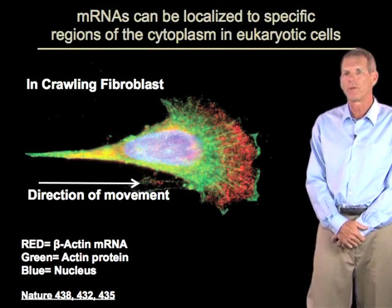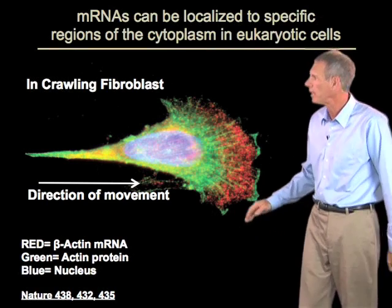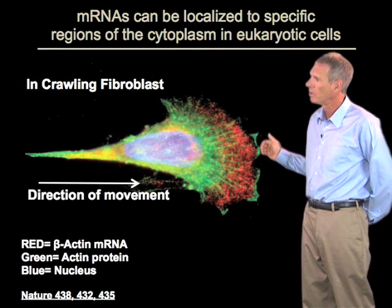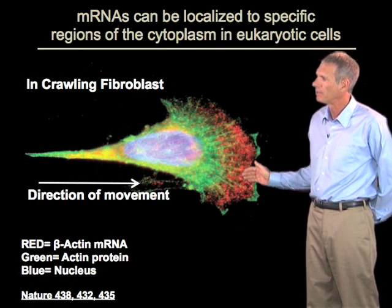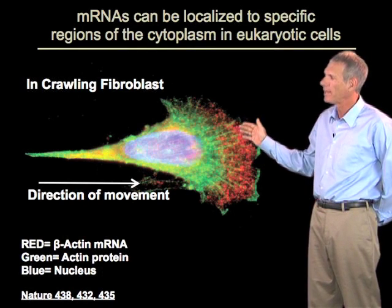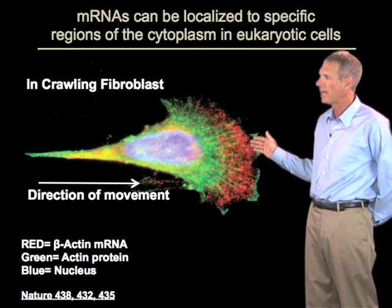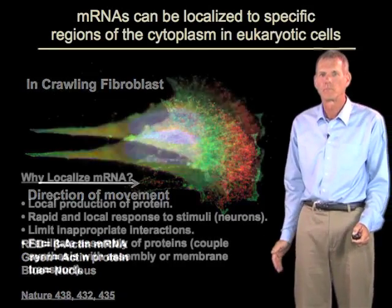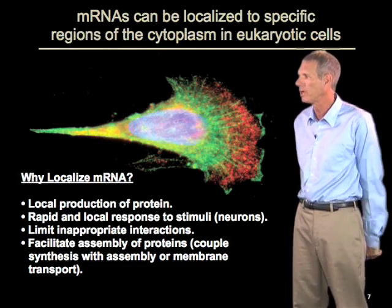Once in the cytoplasm, mRNAs can be localized to specific regions. For example, this is an image of a crawling fibroblast, which would be crawling towards me across the screen. Within the fibroblast, this red structure is actually the beta-actin mRNA, and you can see it's localized to the leading edge of the fibroblast cell. That's because actin filaments are assembling at those sites, and so the cell needs newly synthesized actin preferentially in this region. This illustrates one of the reasons that mRNAs are localized in eukaryotic cells — to allow local production of protein.